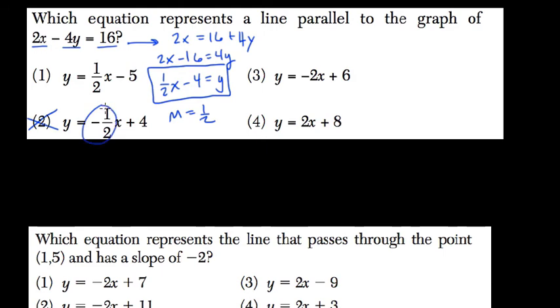This has a slope of negative 1 half. This has a slope of 2. This has a slope of negative 2. So choice 1 is our answer.